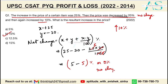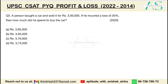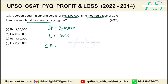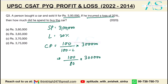2022 question: A person bought a car and sold it for 3 lakh. He incurred a loss of 20%. What was the cost price? Cost price with loss is: 100/(100 − L) × SP = 100/80 × 3,00,000 = 5/4 × 3,00,000 = 3,75,000. Option D is correct.